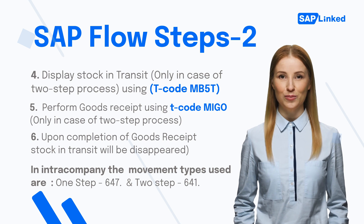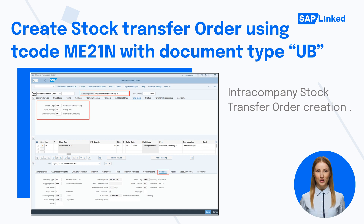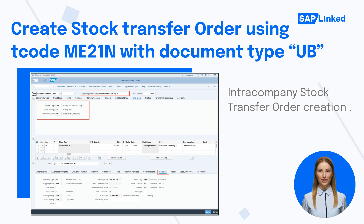Let's learn about each flow step in brief. To create intra-company stock transfer order, go to transaction code ME21N and choose document type UB. Fill in the organizational data and supplying plant information, then click Enter. You will now be able to enter the materials, the quantity, and the plant for which you will receive the items. For intra-company purchase order, the shipping tab must be active and the necessary fields filled in.